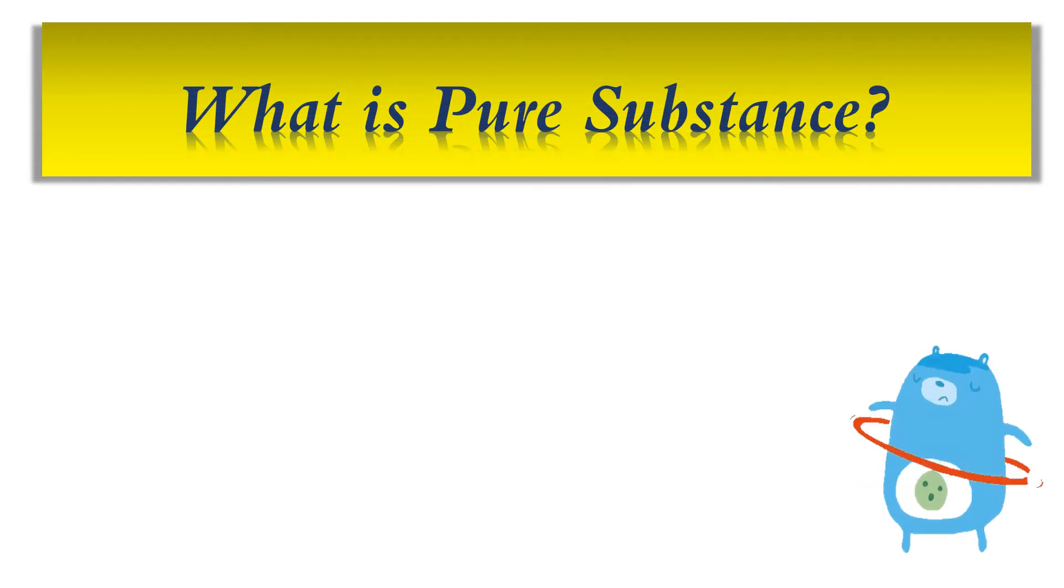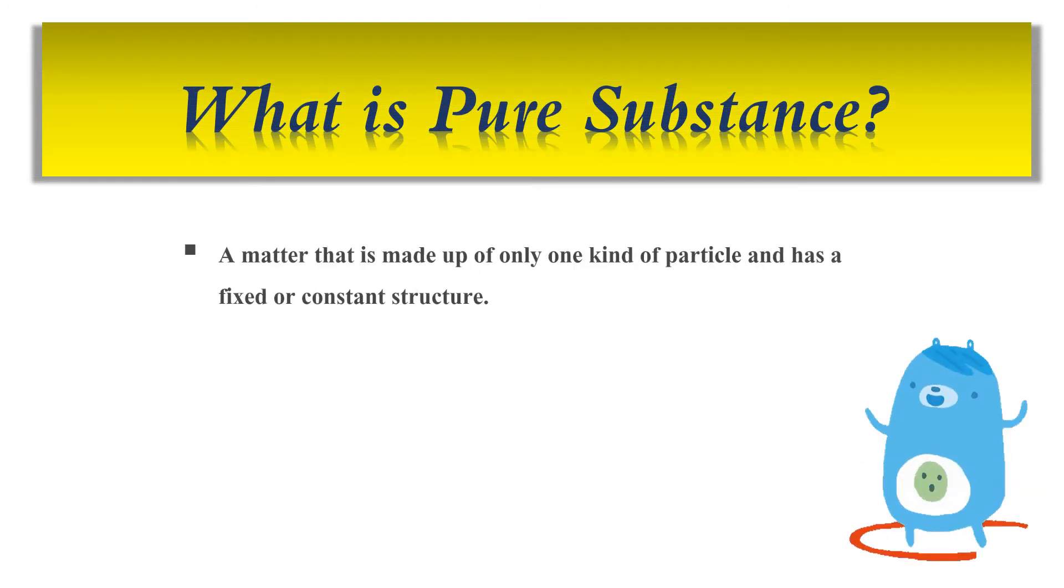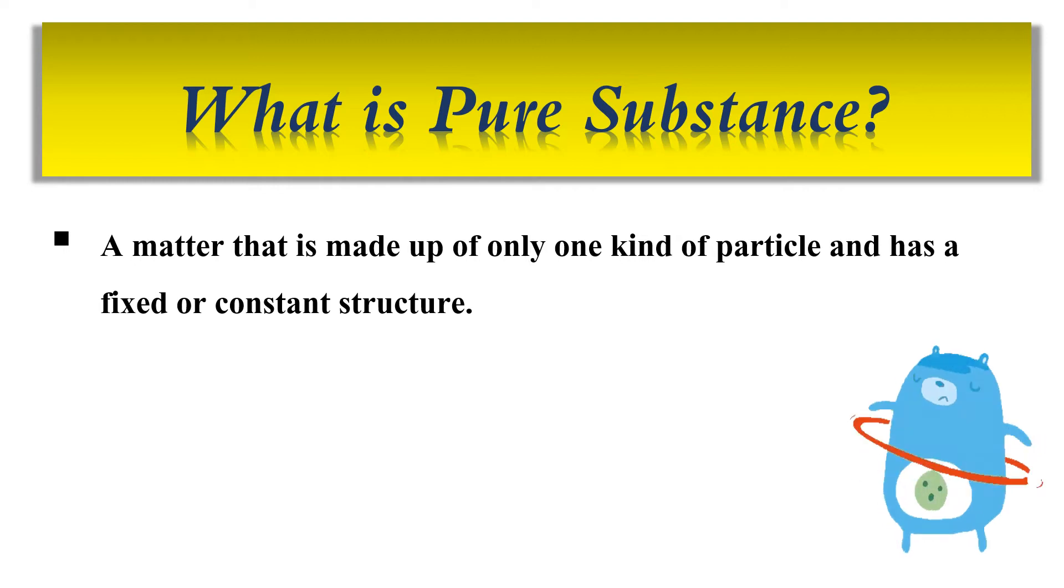What is a pure substance? A pure substance is a matter that is made up of only one kind of particle and has a fixed or constant structure.